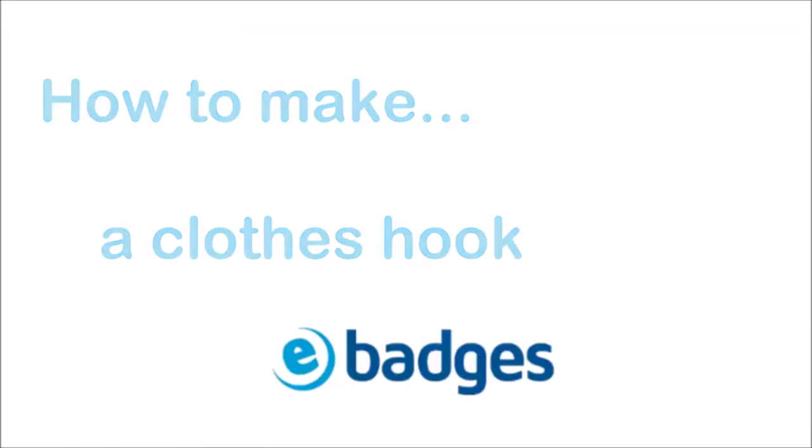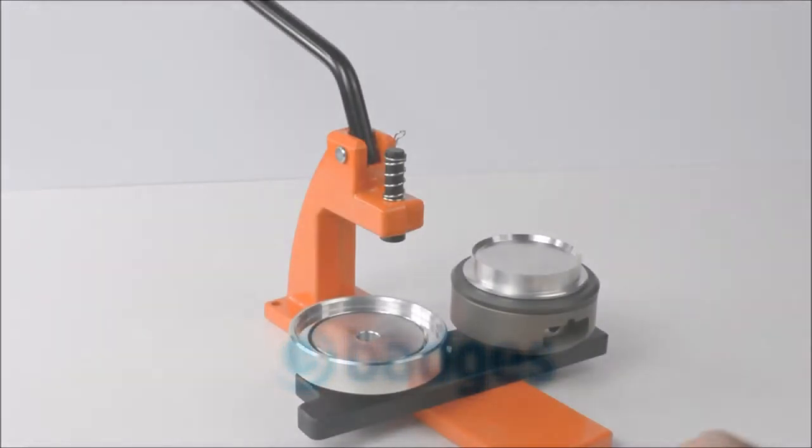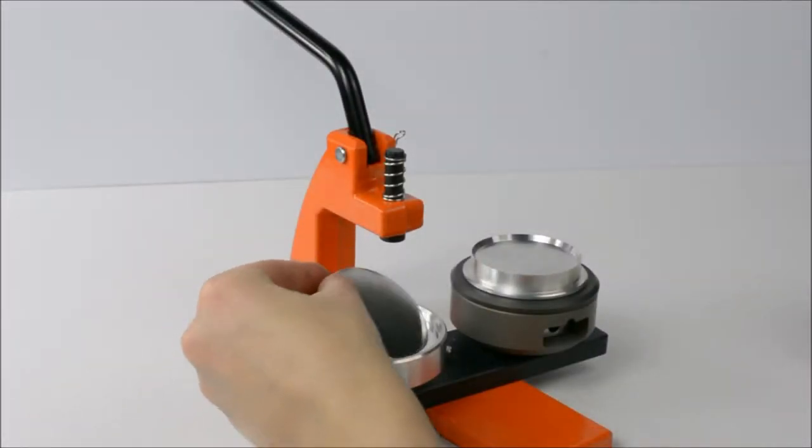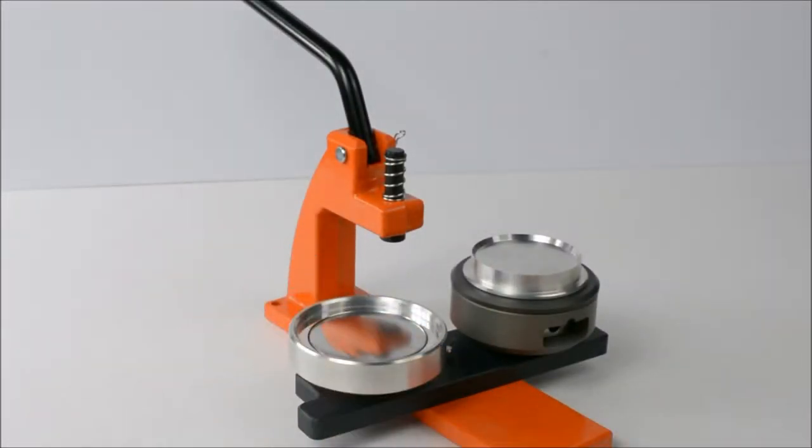To make a clothes hook, start by placing the metal front into the first die. The metal edge should slot easily into the groove in the die.